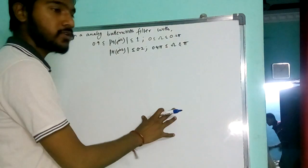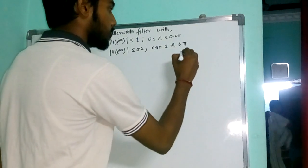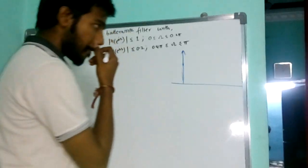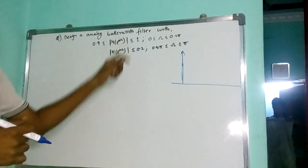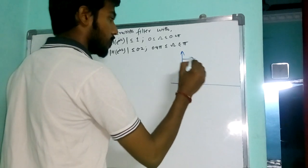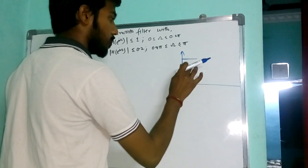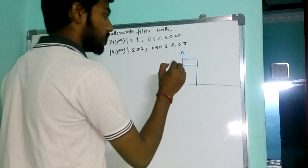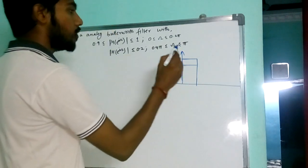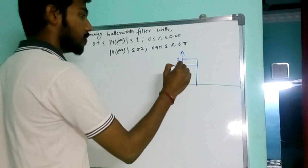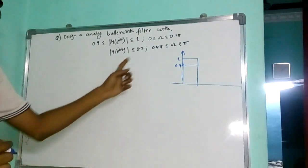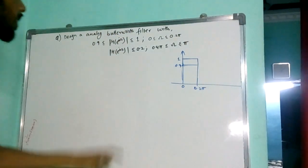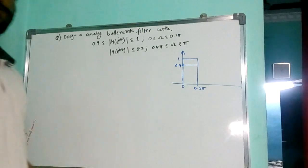Now let's plot the given transfer function here, given response. It says that its value lies between 0.9 to 1, this is 0 to 0.25. And its value is 0.2 for 0.4 pi to pi.